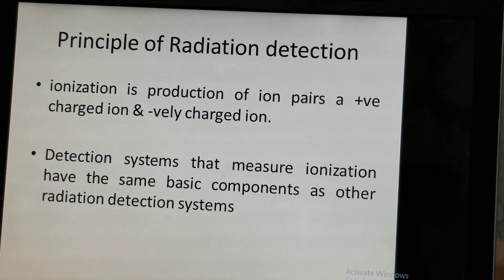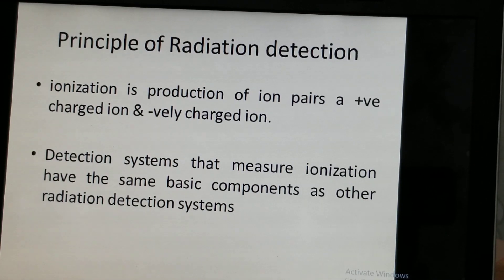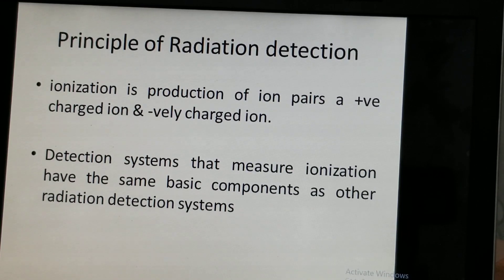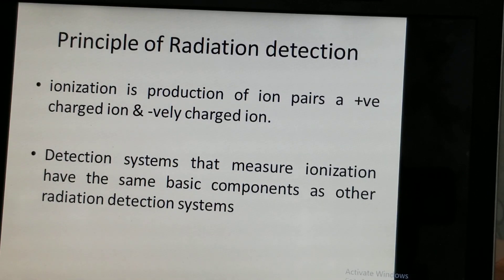The principle of radiation detection is based on ionization. What is ionization? Ionization is the production of ion pairs — a positively charged ion and a negatively charged ion. The detection system measures this ionization, and it has the same basic components as other radiation detection systems.